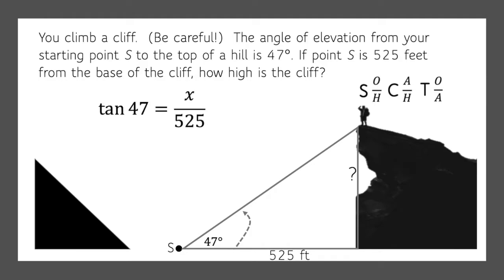So we know the tangent of 47 equals x divided by 525. We'll multiply both sides by 525 and we get x equals 562.99 feet. That's pretty high!